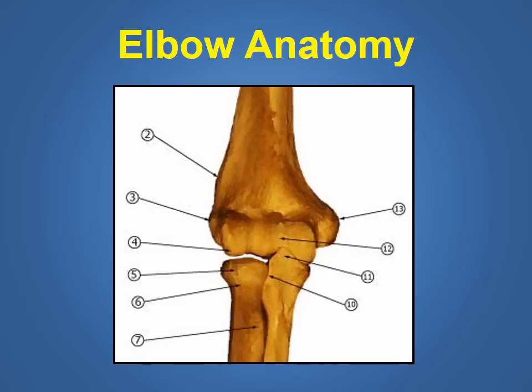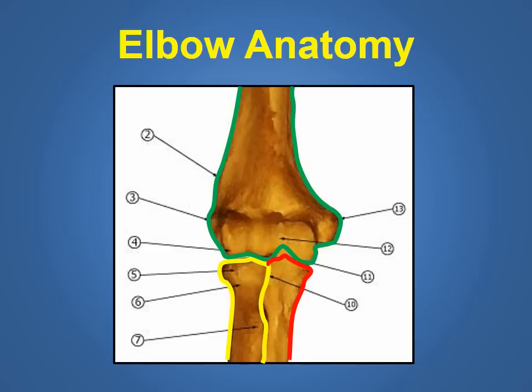This slide shows a view of the front of the elbow joint. The elbow is a hinge joint composed of three bones. The upper arm bone known as the humerus is marked by the green outline. The two bones of the forearm are the radius marked by the yellow outline and the ulna marked by the red outline.